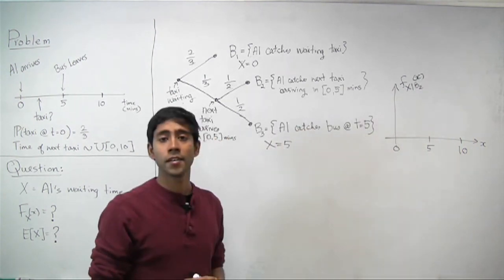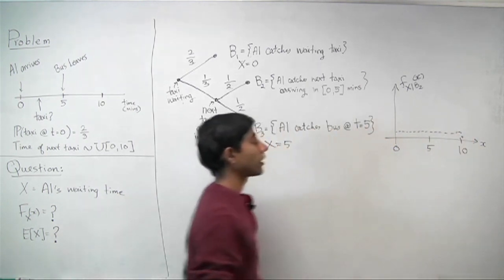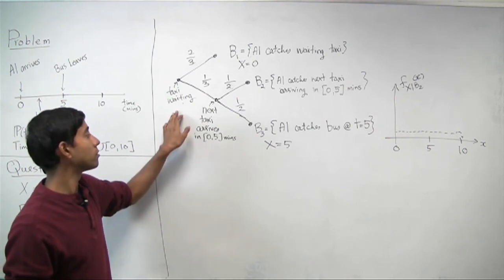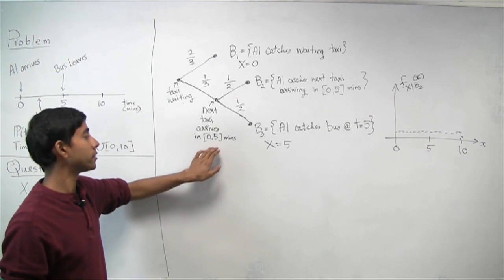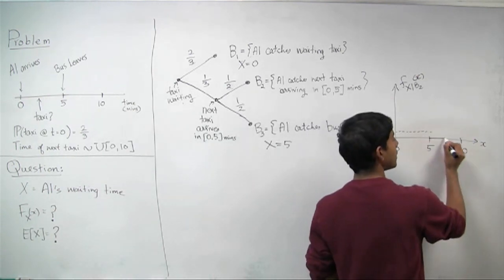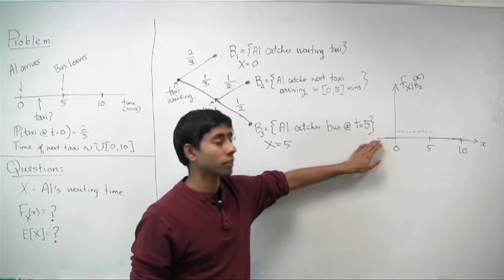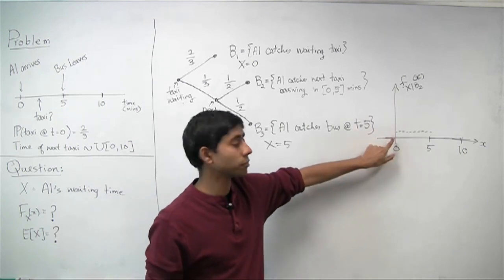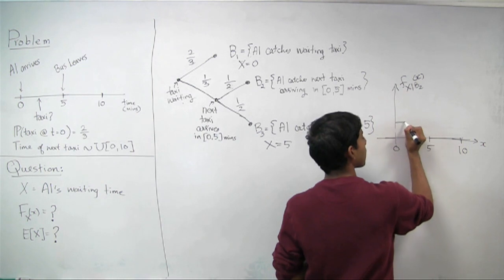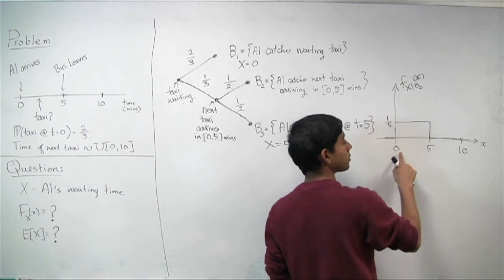The original next taxi was uniformly distributed between zero and ten. But given B2, we know there was no taxi waiting and the next taxi arrives between zero and five minutes. The fact that no taxi was waiting has no bearing on the density, but conditioning on arrival between zero and five means the density is zero outside that interval. Inside zero to five, it's simply a scaled version of the original density — scaled to one-fifth so that it integrates to one.